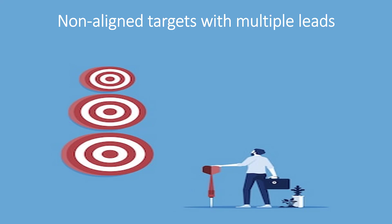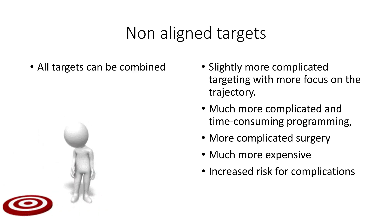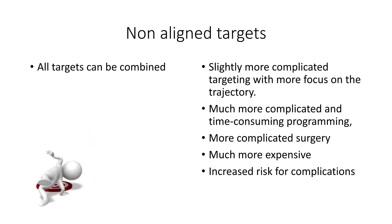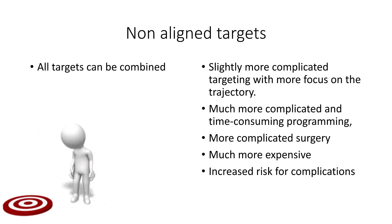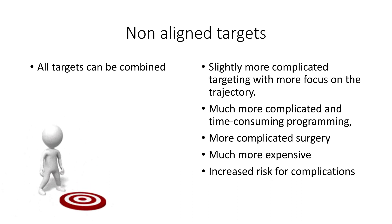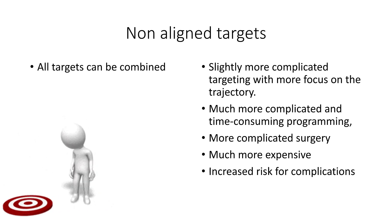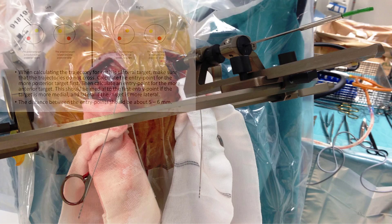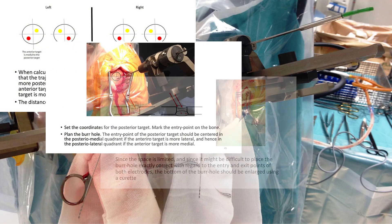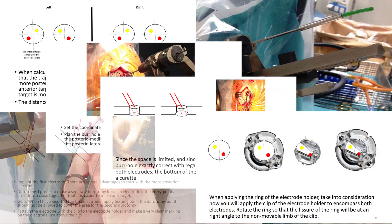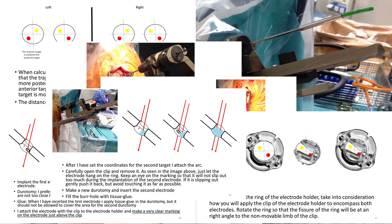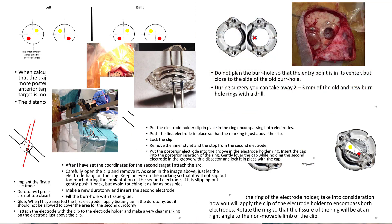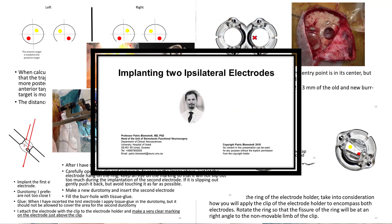Non-aligned targets necessitating multiple electrodes are, however, a different story. All structures can be combined by using two different leads, but the targeting is slightly more complicated, and the programming often becomes much more complicated and time-consuming. It is clear that the surgery becomes significantly more complicated and longer, and of course more expensive, and there must be an increased risk for complications. Thus, one needs good reason to implant multiple non-aligned targets.